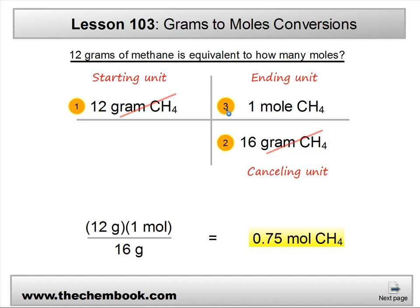So if we look very carefully at this problem, you'll see that the grid is set up so the starting unit and the canceling units are gone, and we end with moles. You'll also notice that this means molar mass is sitting down at position number 2.